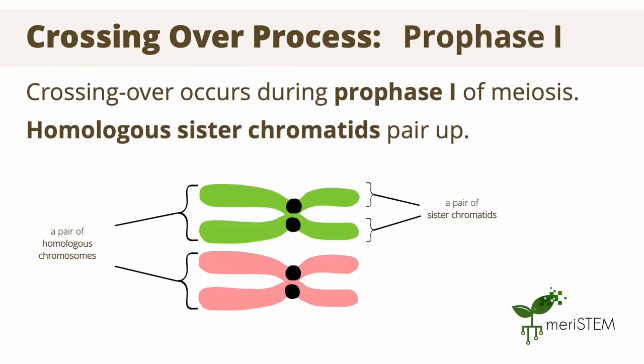In the diagram, you can see a pair of homologous chromosomes in two different colours. Each pair of sister chromatids are identical copies produced after replication and are shown using the same colour. In prophase 1, homologous sister chromatids line up next to each other.